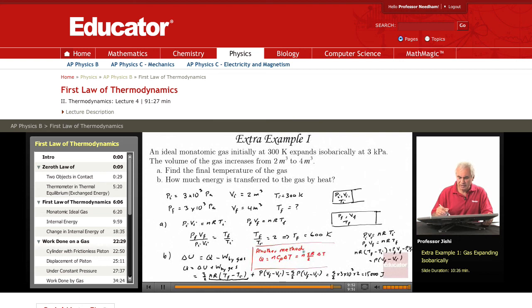Now nR delta T, from here nR delta T is simply P times delta V, the change in volume. So this is 5 over 2 P times the change in volume, VF minus VI, which is the same as we got here, 5 over 2 P times VF minus VI. So we can obtain the answer in both ways. It's the same answer.